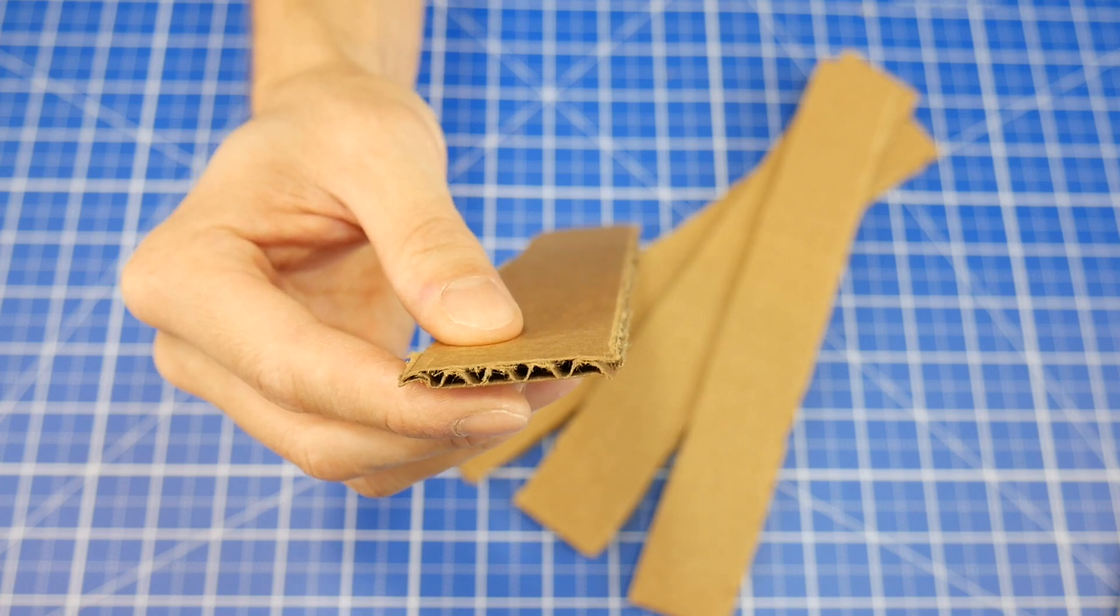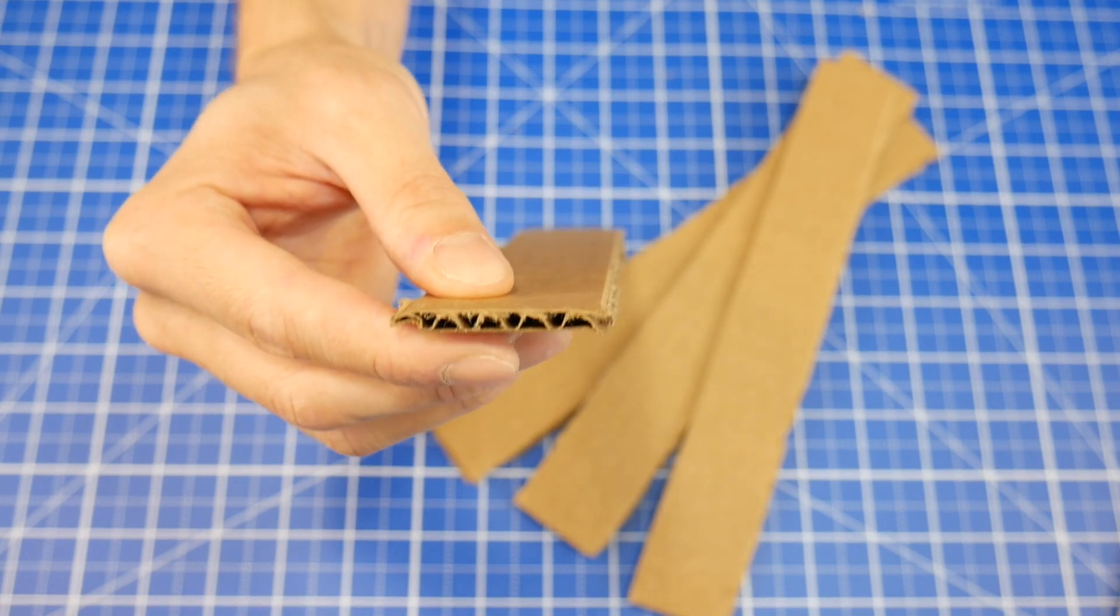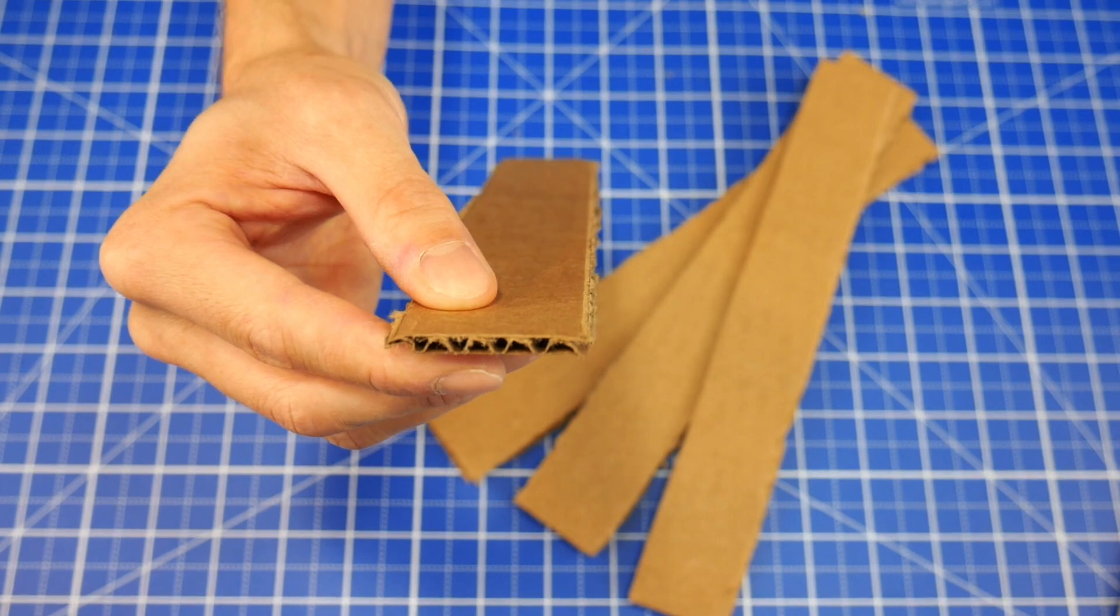Make sure that the corrugations run down the length of each strip, like this. This will make the grabber much more durable.